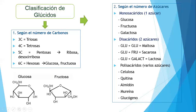La fructuosa — contando sus carbonos: uno, dos, tres, cuatro, cinco, seis — también es una hexosa. Entonces la fructuosa, así como la glucosa, vienen a ser hexosas.